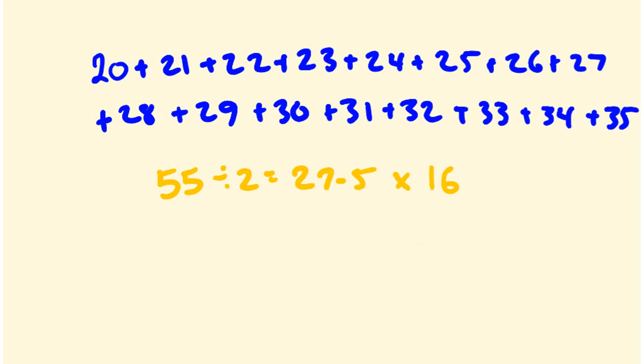So 27 and a half times 16. Well, if I was trying to do this in my head, I would do the following. I would double this answer and I would halve this answer. So if I doubled this answer, I'd get 55 times 8. And then to make that even easier, I might even double this again and get 110 times 4. The answer to this is 440.